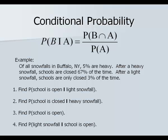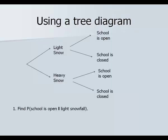Starting with the first one: the probability that school is open given it was a light snowfall. Here's a tree diagram for this situation. We start with whether it was a light or heavy snowfall, then go on to whether school is open or closed. Heavy snowfall occurs five percent of the time, so 95 percent is light. If heavy, schools close 67 percent of the time, meaning 33 percent still open. If light, school is closed three percent of the time, meaning 97 percent of the time it's open.